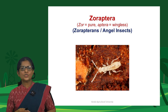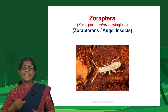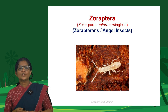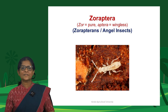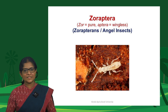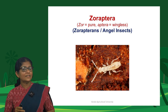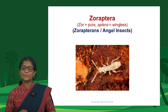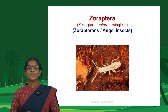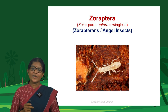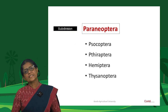Zoraptera, the last order under Polyneoptera, are called angel insects — very pure, delicate, soft-bodied, and light-colored. 'Zor' means pure and 'aptera' means wingless, though Zoraptera are not always wingless; when Silvestri first discovered the insect in 1913 he described an apterous form, but winged forms were later collected. This order is also not recorded from India.